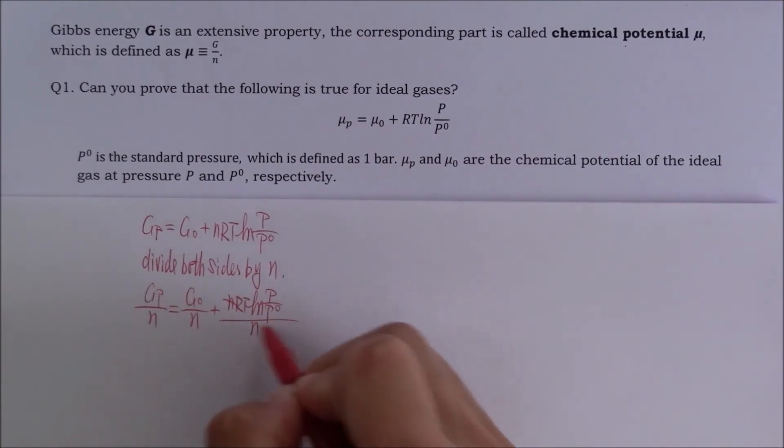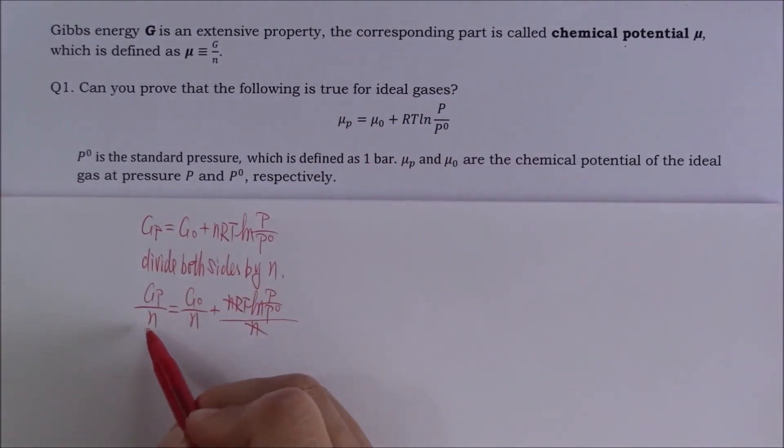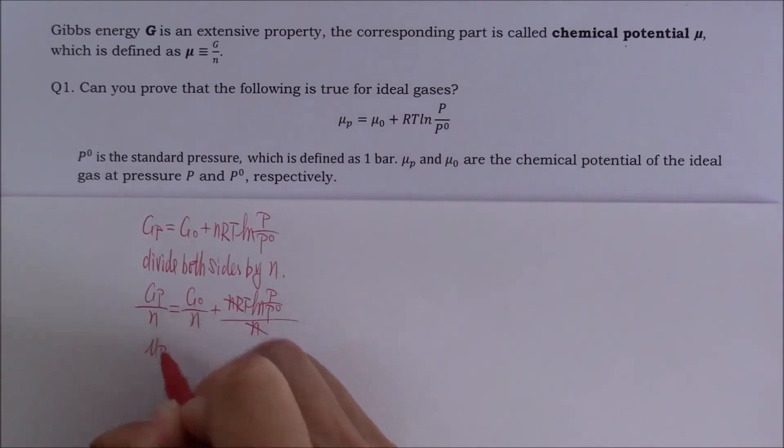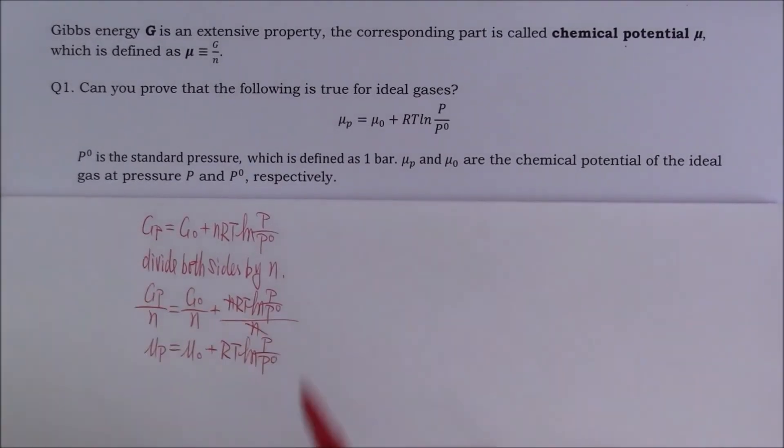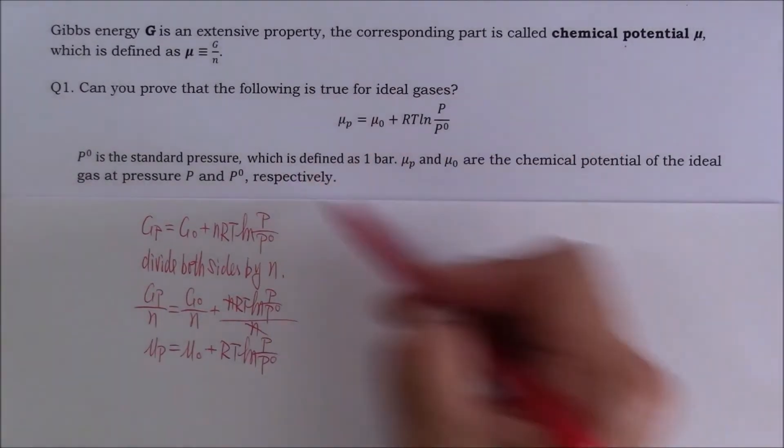N and N will cancel. This is μ_P. This is μ_0. We've proven what we are looking for.